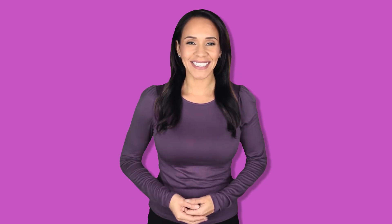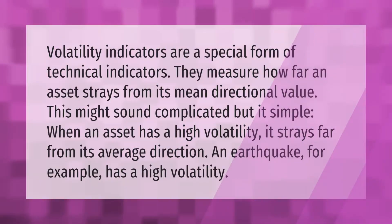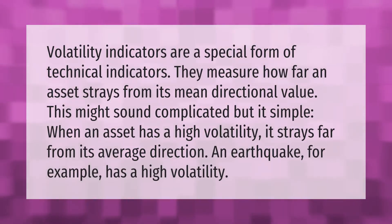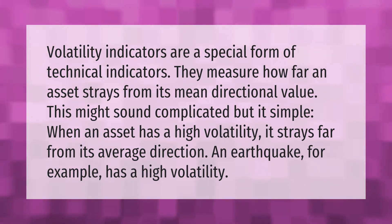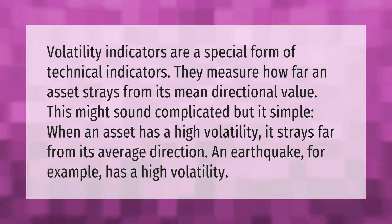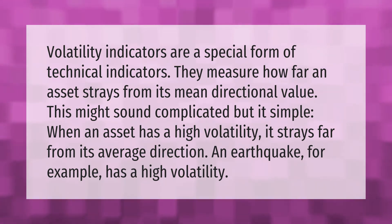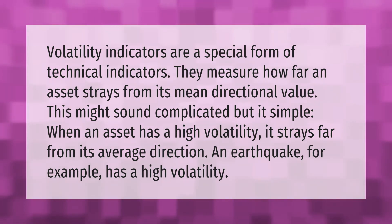Volatility indicators are a special form of technical indicators — they measure how far an asset strays from its mean directional value. When an asset has high volatility, it strays far from its average direction. An earthquake, for example, has high volatility.